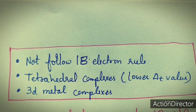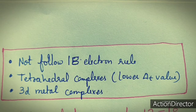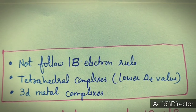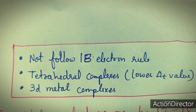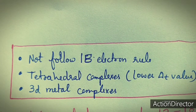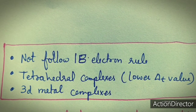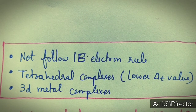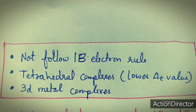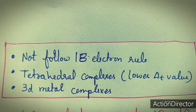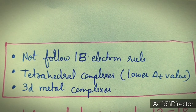As a conclusion, class 1 complexes do not follow the 18 electron rule. Tetrahedral complexes are also included in this class because the delta T value is always lower, so they always form high spin complexes. Those compounds which have a very small delta O value come under this category. Tetrahedral complexes and complexes of 3D metal elements fall under class 1.